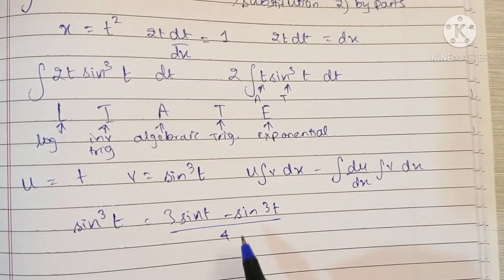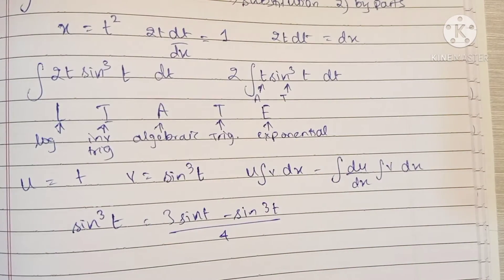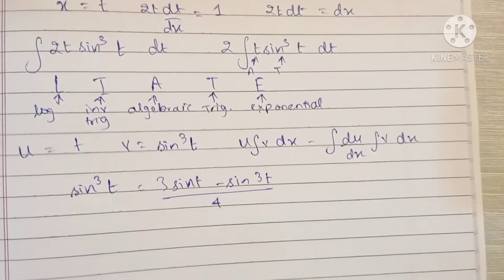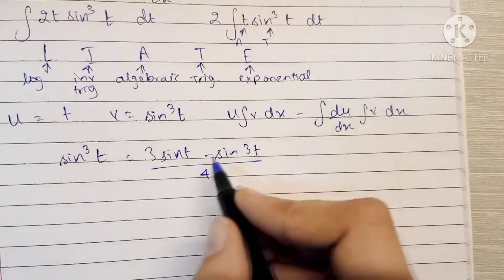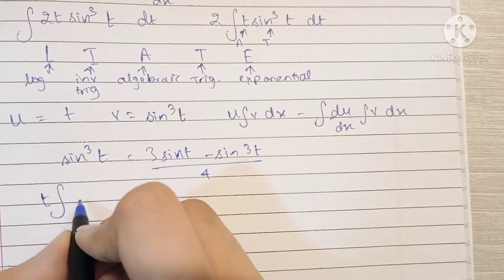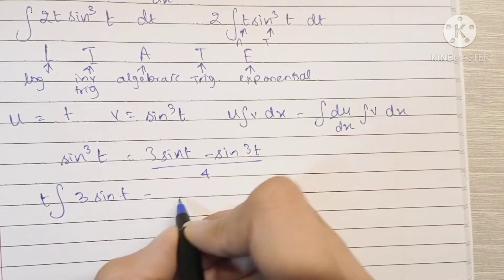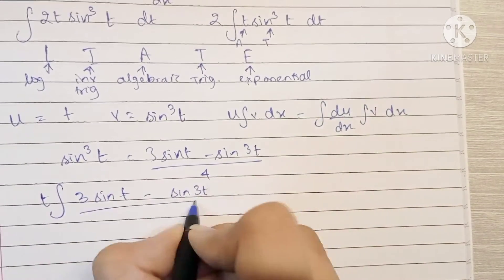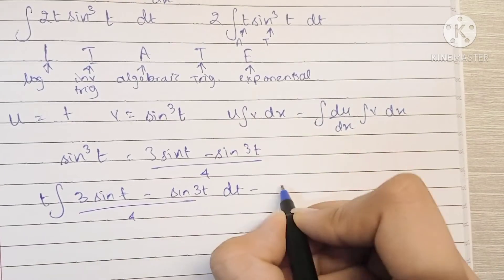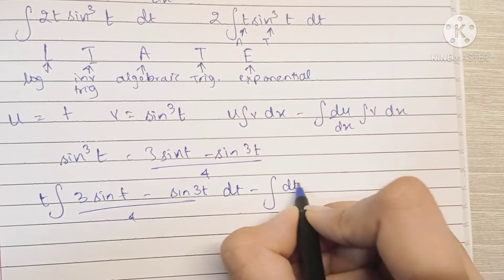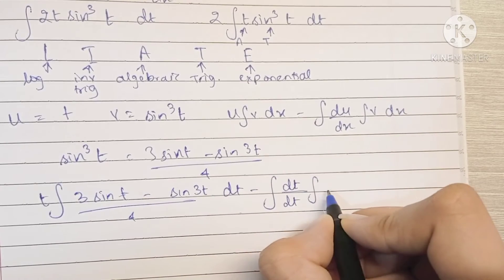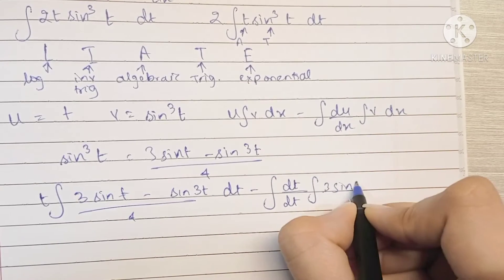So now let's start. U, that is t, into the integration of 3 sine t minus sine 3t upon 4, minus the integration of differentiation of t into the integration of 3 sine t minus sine 3t upon 4.